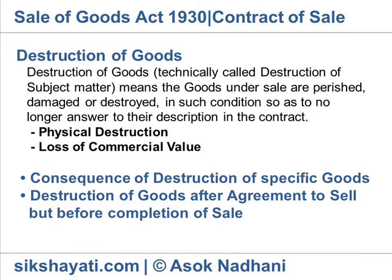Consequence of destruction of specific goods: In a contract of sale of specific goods, the contract is void if the goods, without the knowledge of the seller, have at the time when the contract was made perished or become so damaged as to no longer answer to their description in the contract. This rule is based on the rule of impossibility of performance. No compensation is payable by the seller in such situation if the seller does not have knowledge of destruction of the goods at the time of agreement to sell. If the seller sells with knowledge of destruction, it amounts to fraud and becomes liable to compensation. This rule is not applicable for unascertained goods, future goods, or goods destroyed before formation of contract of sale.